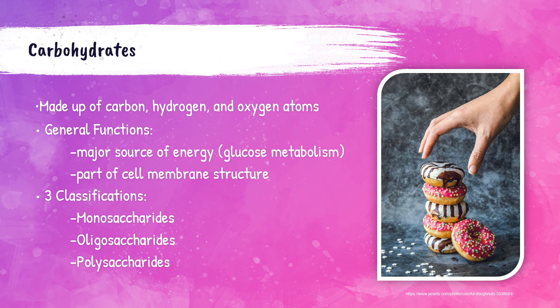Carbohydrates are classified by the number of carbon atoms present within the chain, the length of the chain of carbons, and the location of the carbonyl group — where the carbon atom is double bonded to the oxygen atom. We're going to talk about three classifications of carbohydrates: monosaccharides, oligosaccharides, and polysaccharides.